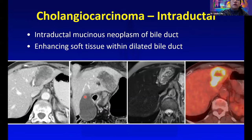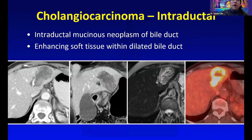This is the intraductal growth pattern of cholangiocarcinoma. They're kind of like IPMNs of the bile ducts. Because of the high mucin content, you expect to see a very T2 bright lesion, heterogeneous enhancement, and hot on PET.